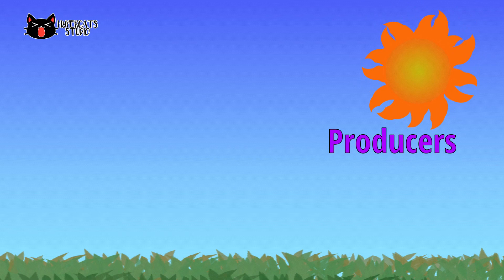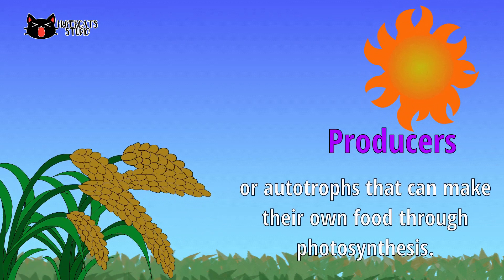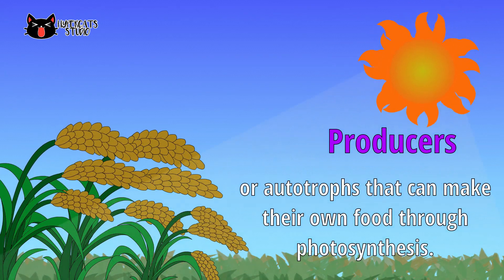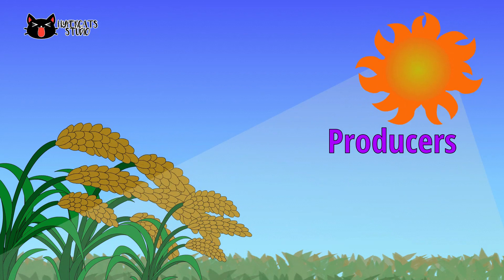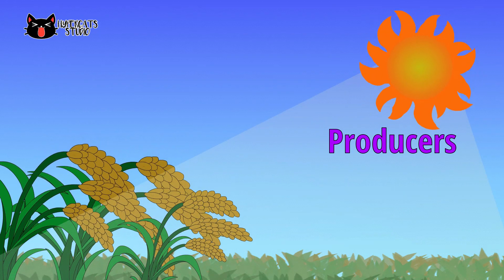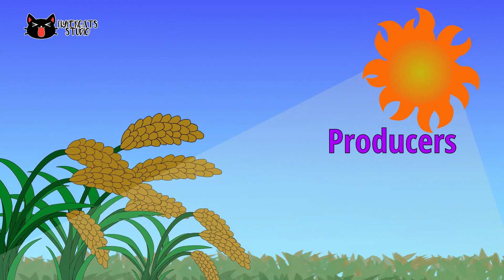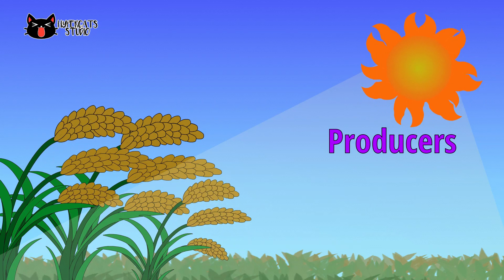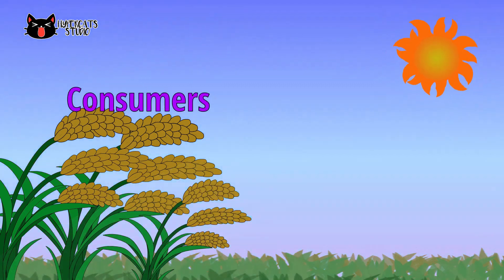Producers or autotrophs can make their own food through photosynthesis. During photosynthesis, plants capture light energy and use it to convert water, carbon dioxide and minerals into oxygen and other organic compounds like sugar. The next category is consumers.